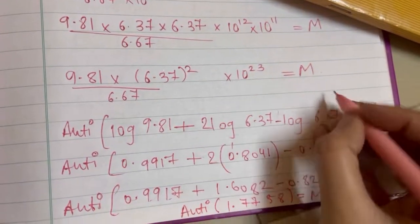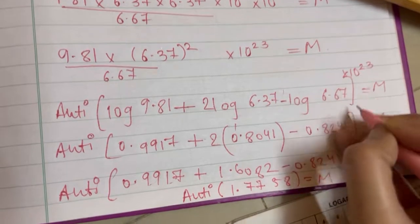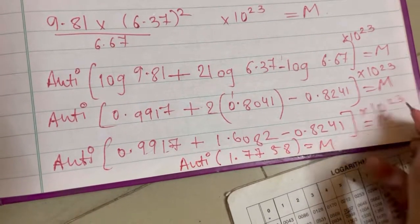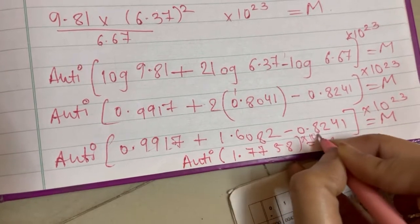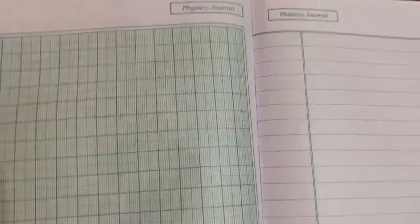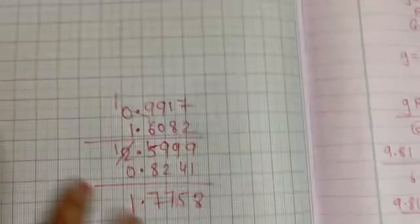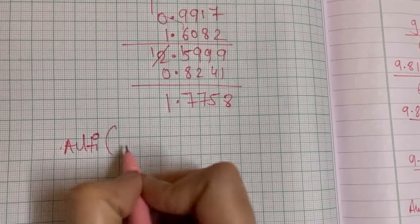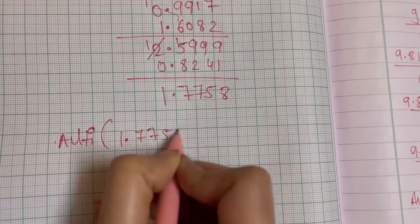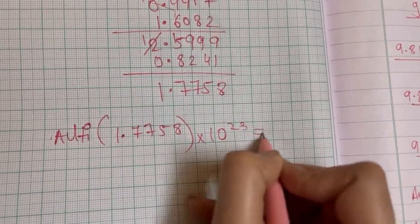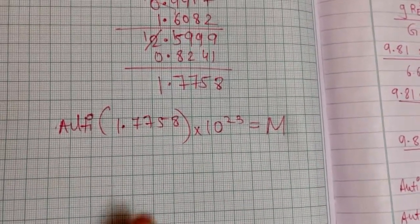Into 10 raise to 23, we will not take this 10 raise to 23 in the log and 10 raise to 23, so I'll write this.